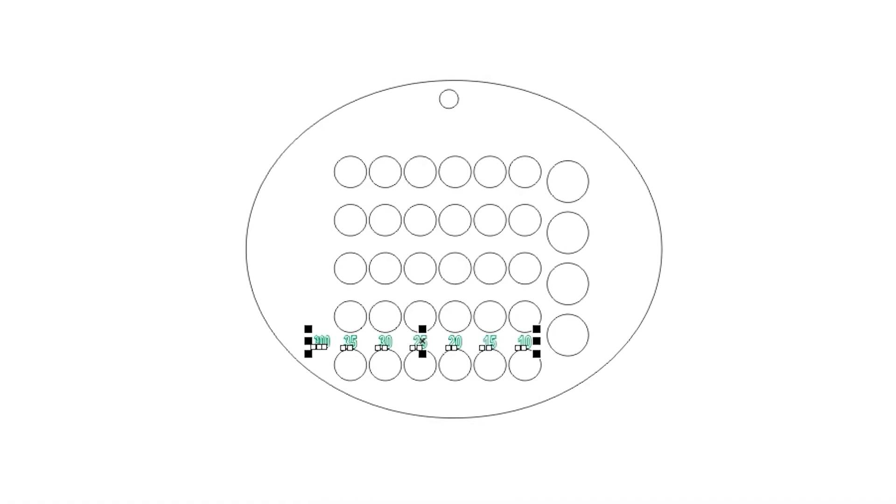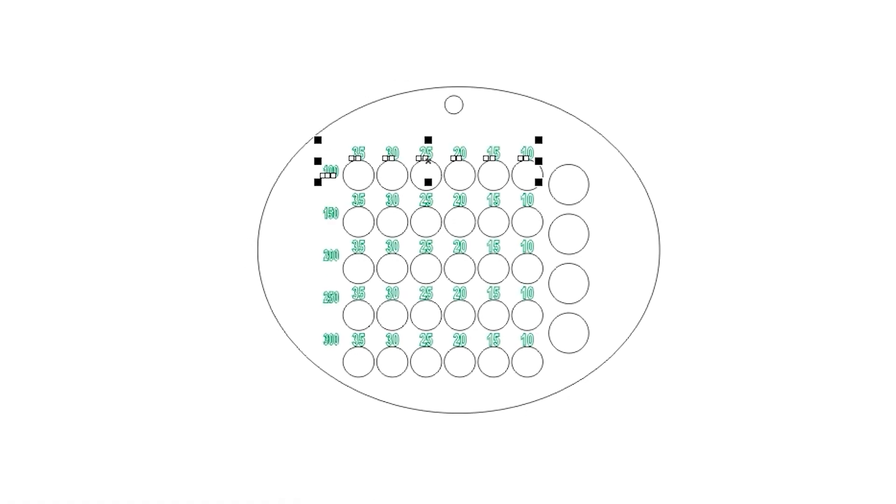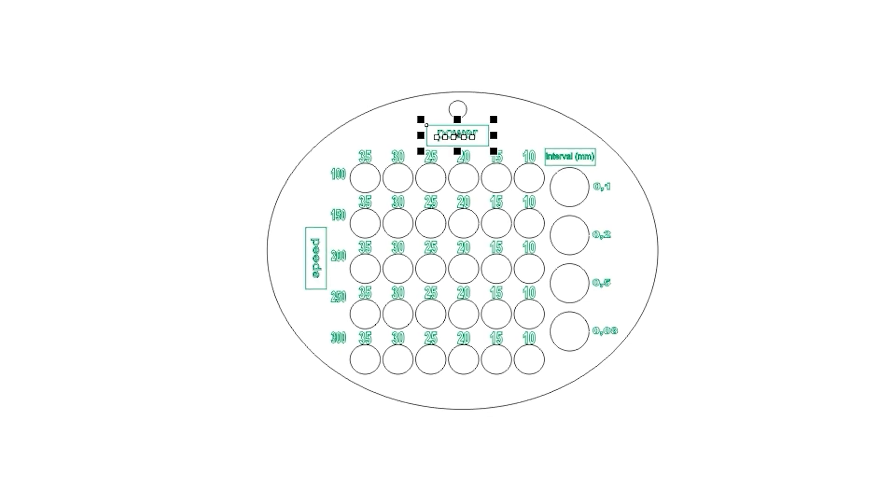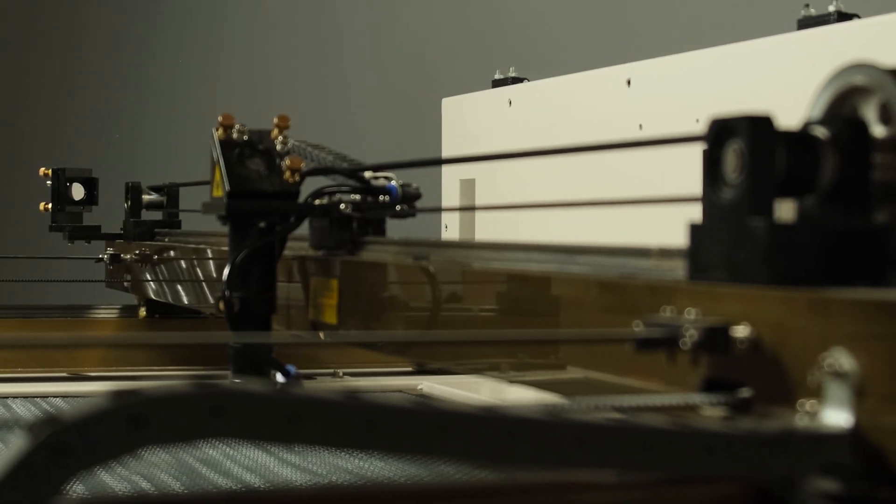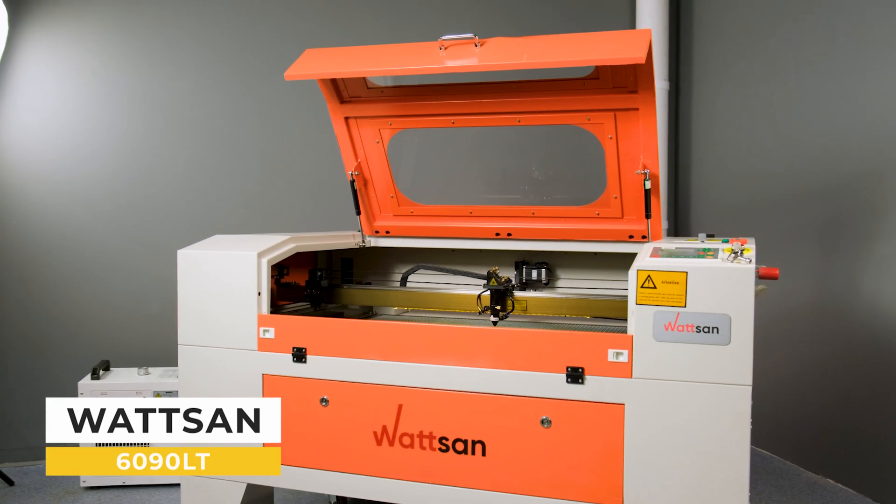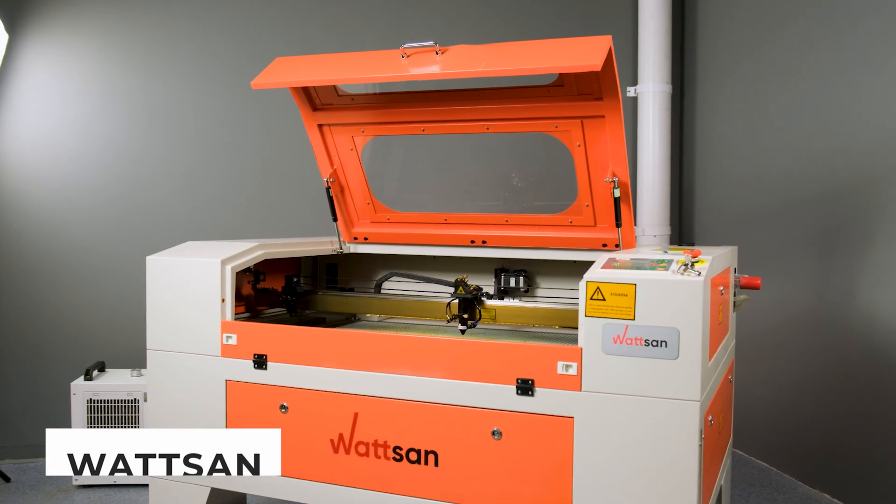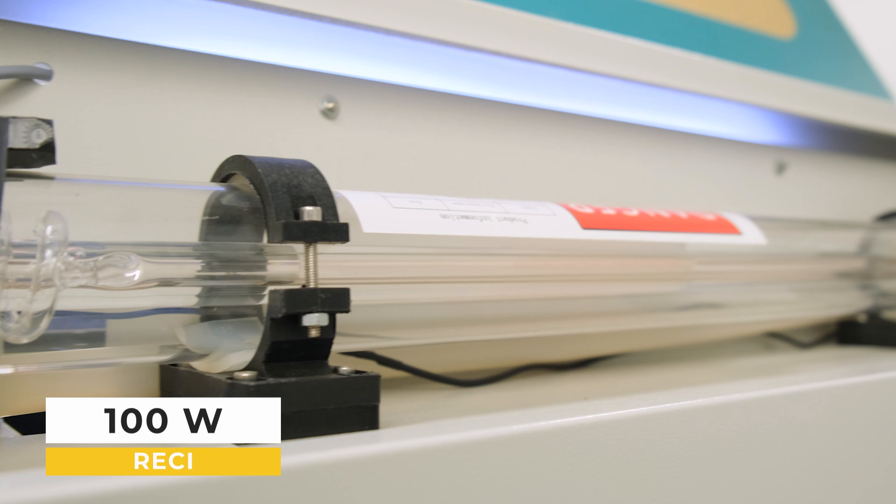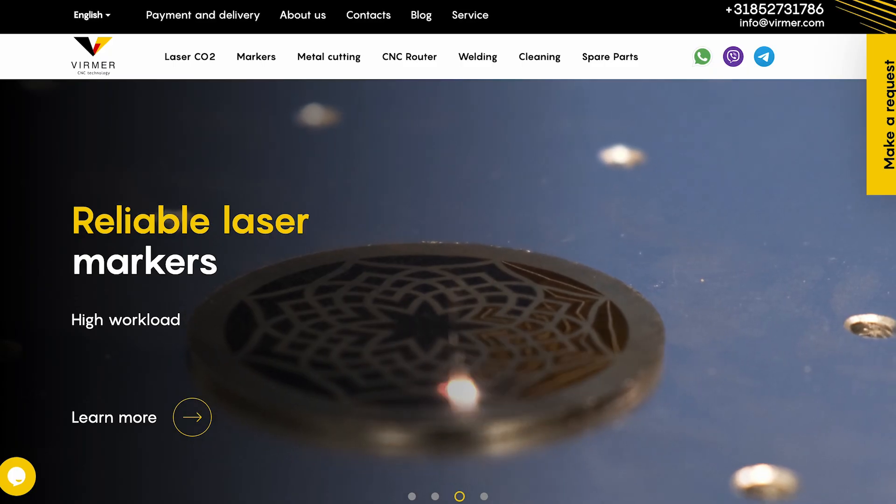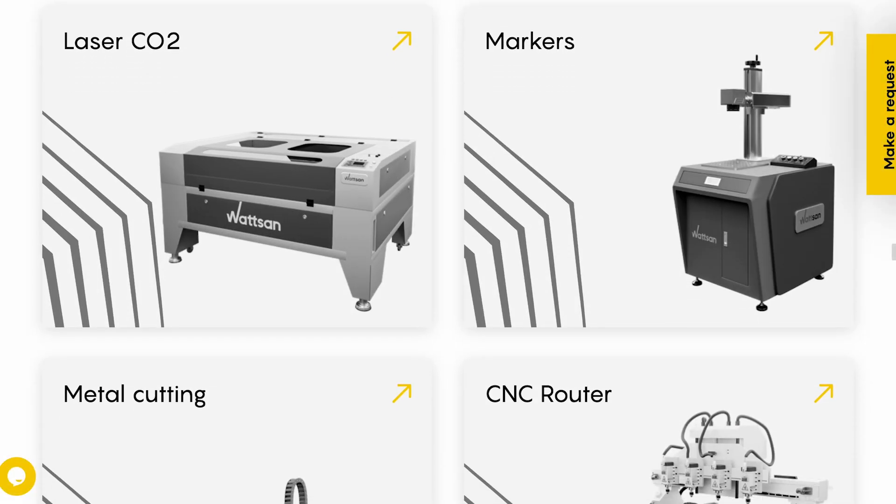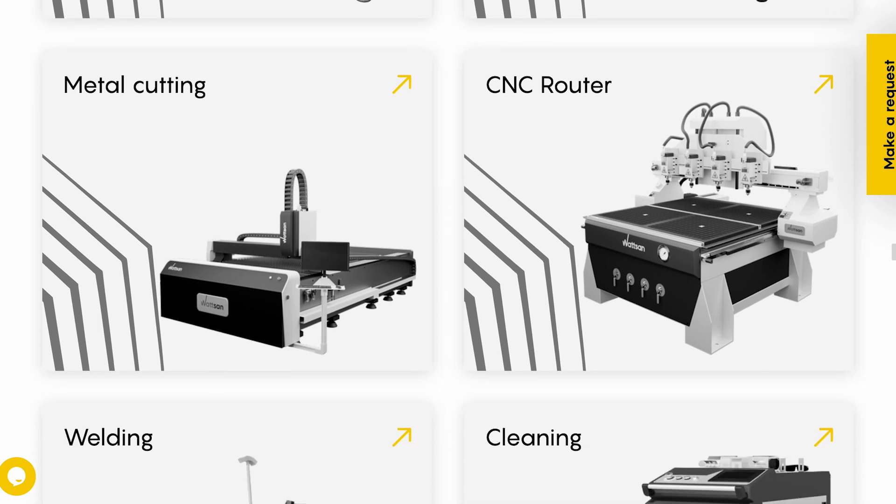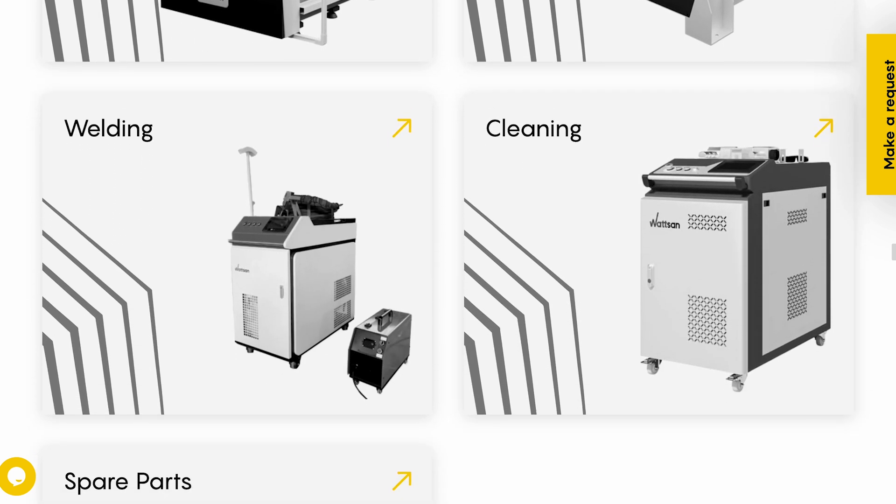Such a template is useful not only for beginners but also for experienced laser equipment owners. The template can be modified according to your requirements. In this video we will use the Wattson 6090 LT with a 100 watt Reci laser tube. On our website you can find a complete list of our machines and accessories. Our managers are always happy to help you with choosing the best option for your tasks.